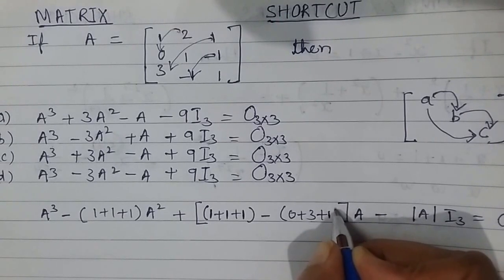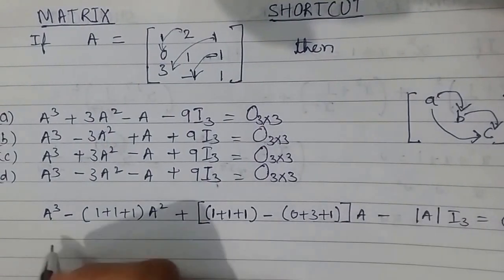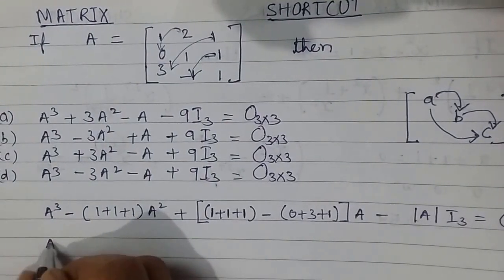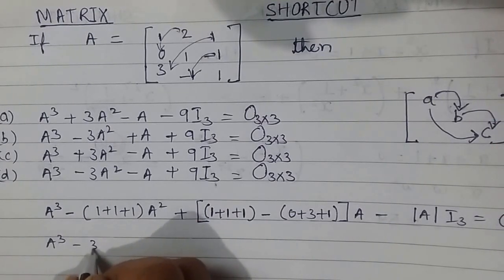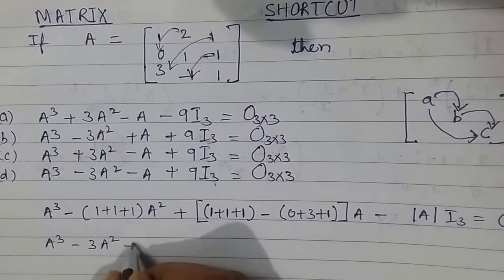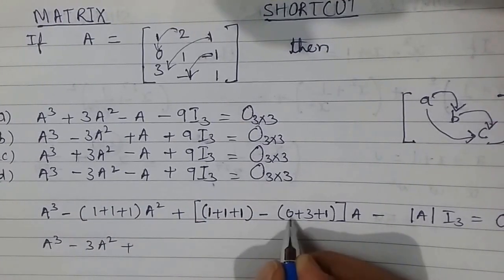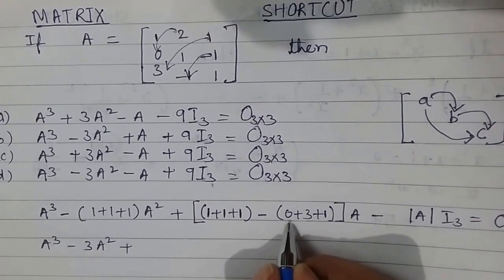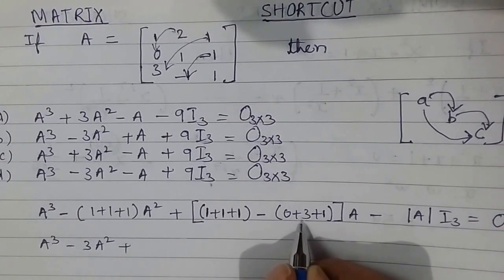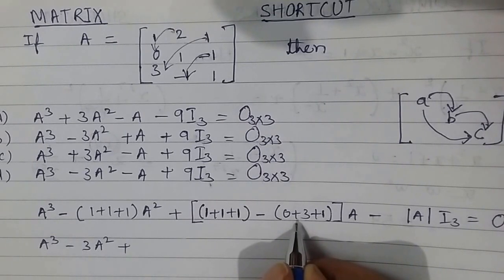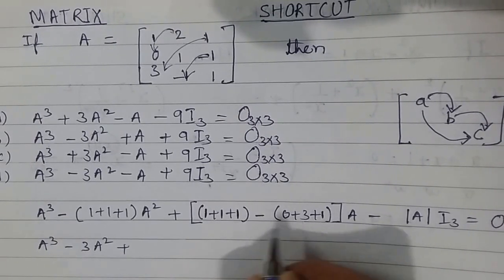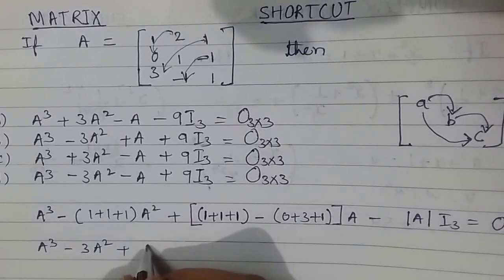So let us write here: this is A³ - 3A² plus this is 3 and this is minus of 3 plus 1, which is 4. So 3 minus 4 is minus 1, so this will be minus A.